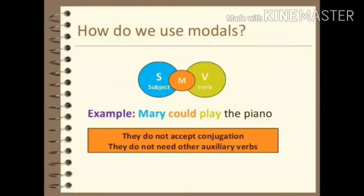Now let's discuss how we use modals. The formula for using modals is: subject plus modal auxiliary verb plus main verb plus object. For example, 'Mary could play piano.' Here, 'Mary' is the subject, 'could' is the modal auxiliary verb, and 'play' is the main verb.